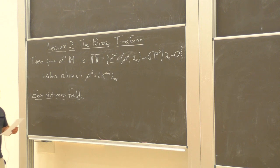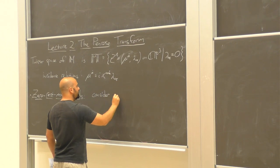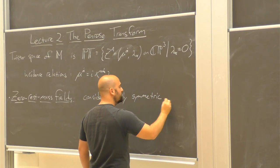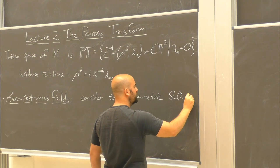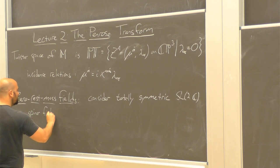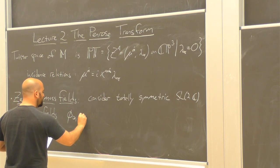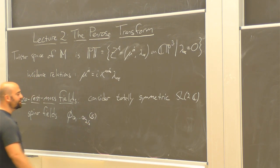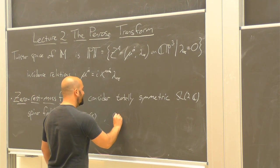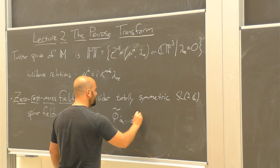So what are these things? We start by considering totally symmetric SL(2) spinor fields — say phi with 2S symmetric undotted spinor indices. The reason for this choice of 2S will become apparent soon. We can also have ones that have a symmetric set of dotted spinor indices.